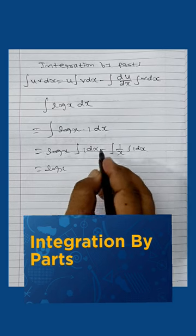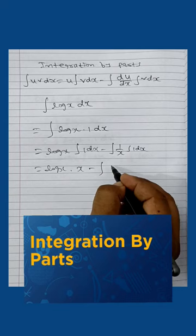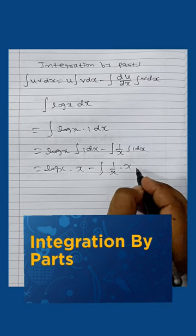Log x times integration of 1 dx. Here you can write down x minus integration of 1/x. Integration of 1 dx is x, so we have x dx.